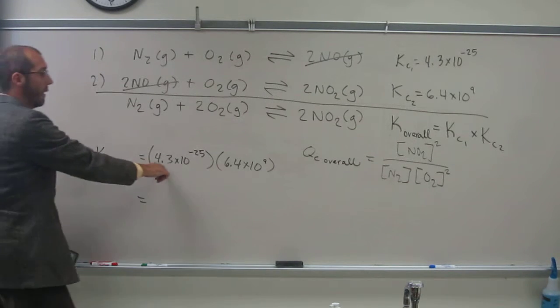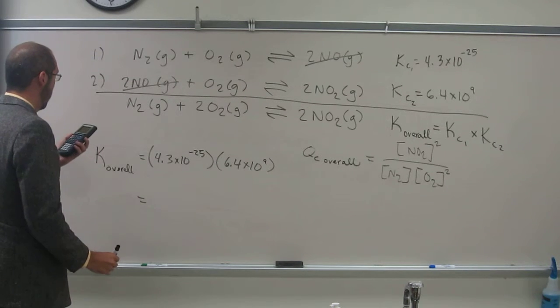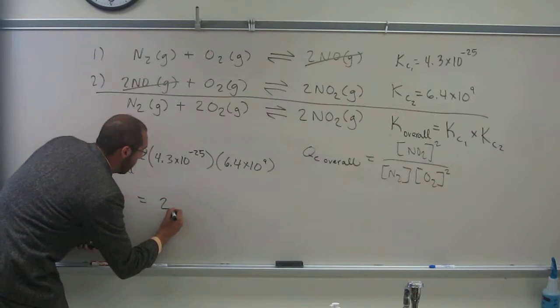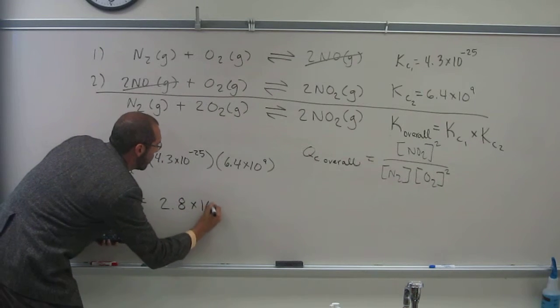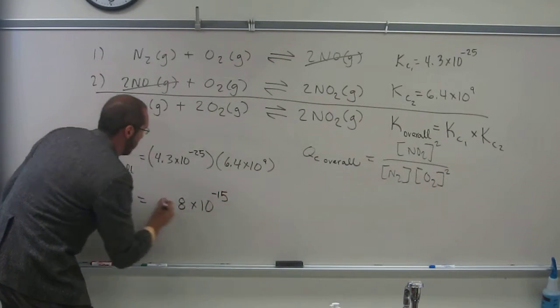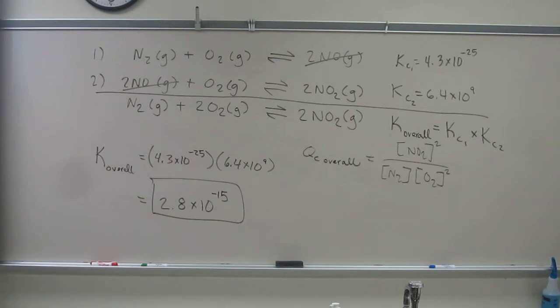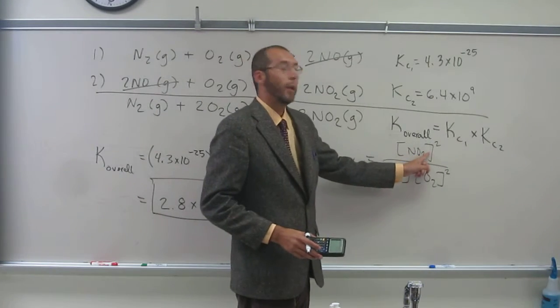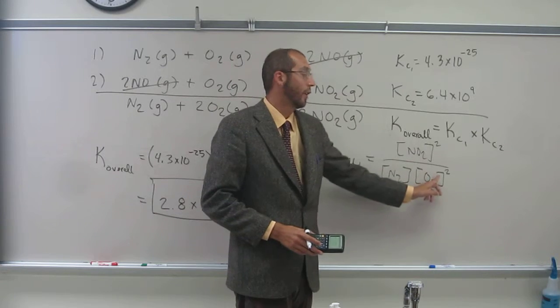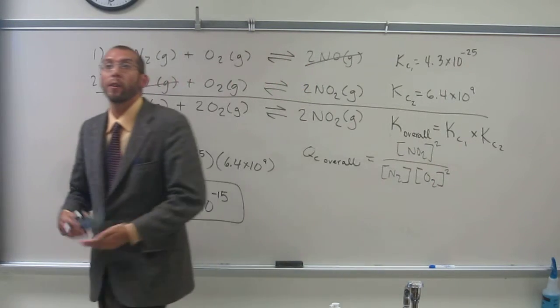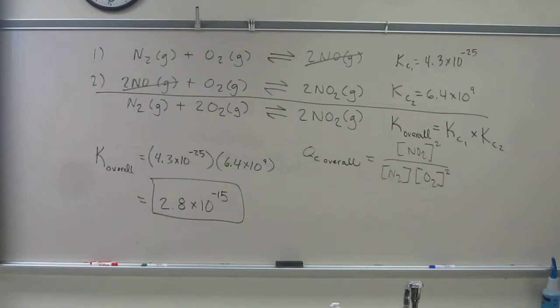And so to two sig figs, right? So I got 2.8 times 10 to the negative 15. So remember, K and Q is one of the few things in chemistry that don't have units associated with them. Even though, if you could imagine, this would be molar squared, right? This would be molar, this would be molar squared. So even though you're going to have all these different kind of molarity units, you're just going to get rid of them at the end. So there's no use in trying to keep your units.